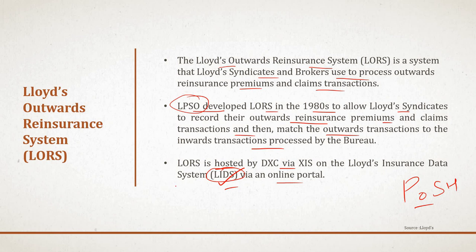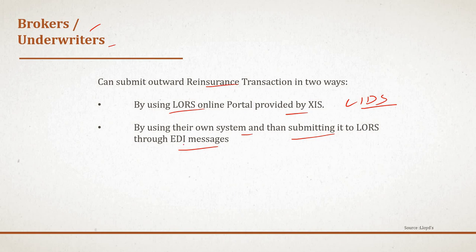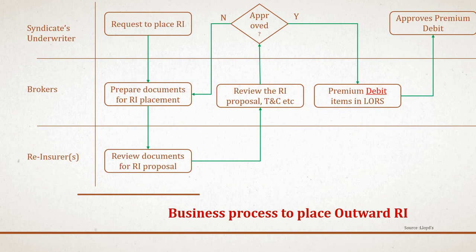LPSO and LIDs are covered in detail in previous video presentations. Brokers and underwriters can submit outward reinsurance transactions in two ways: directly using the Lloyd's online portal provided by XIS on top of LIDs, or by using their own system and submitting to Lloyd's via an EDI (Electronic Data Interface) message. The actors involved in the outward RI placement process are the syndicate, broker, and reinsurer. The syndicate uses LORS to instruct a specialized reinsurance broker to find and place reinsurance on their current risk exposure.